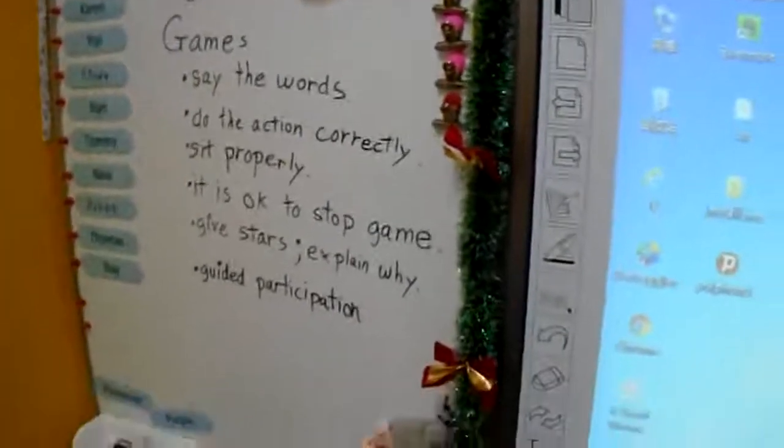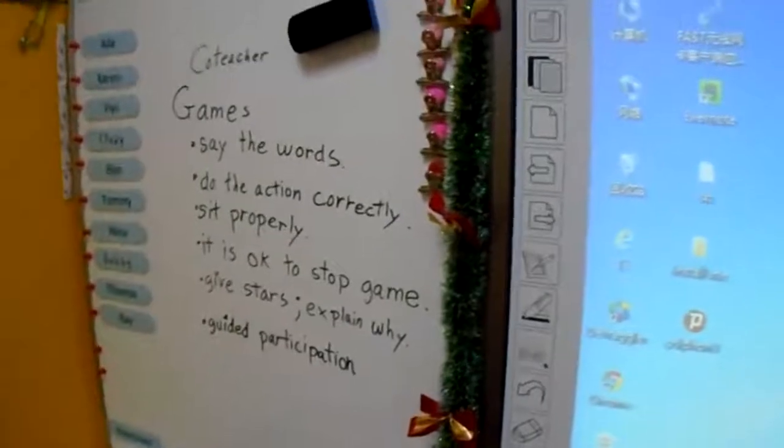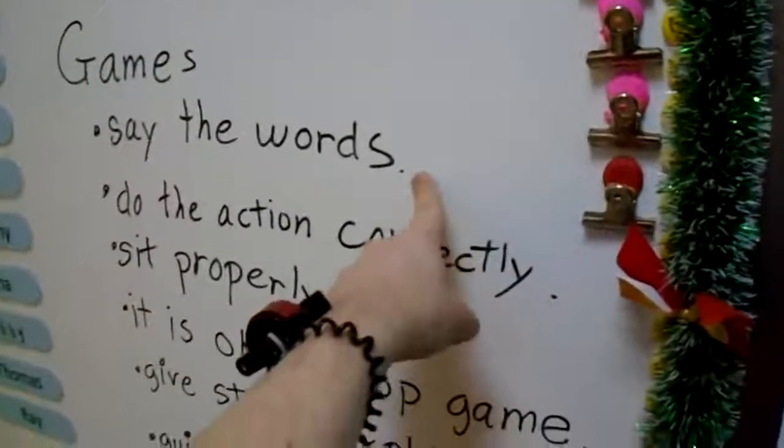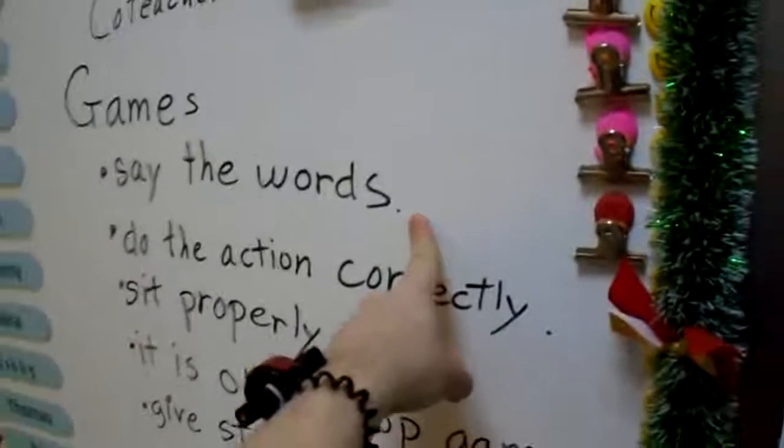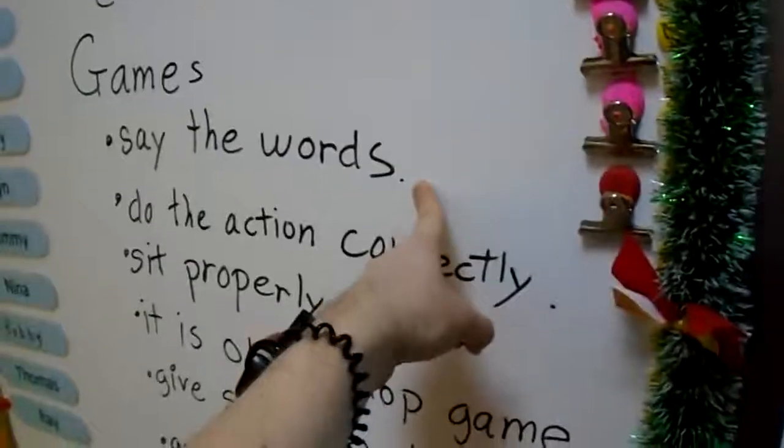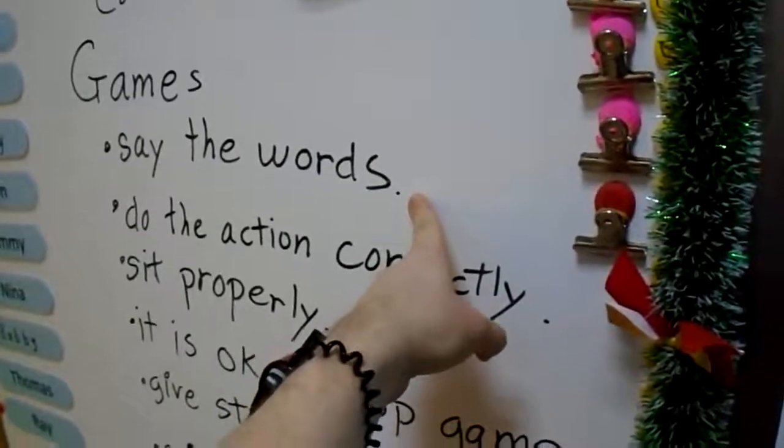When co-teaching, some of the useful things you can do, especially during a game, is to check the children's participation. Make sure it's educational. Make sure that they are saying any words that they're supposed to say.